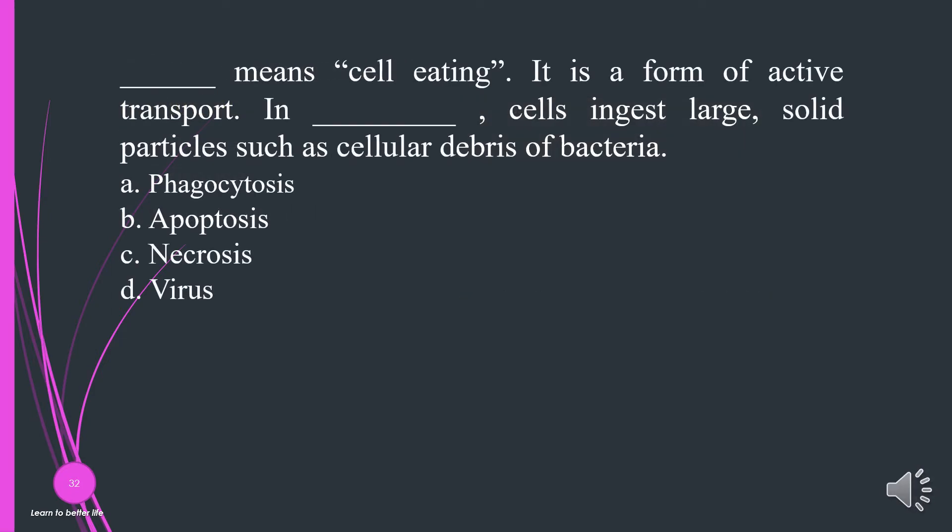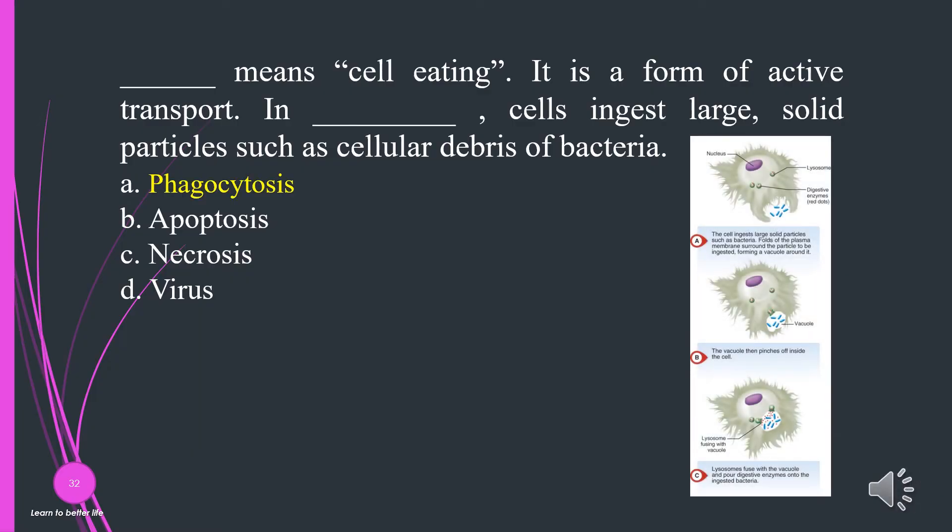What means cell eating? It is a form of active transport. In phagocytosis, cells ingest large, solid particles such as cellular debris or bacteria. A. Phagocytosis. B. Apoptosis. C. Necrosis. D. Virus. The answer is A, phagocytosis.